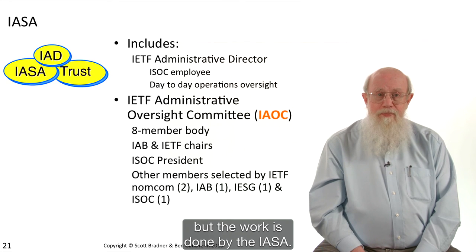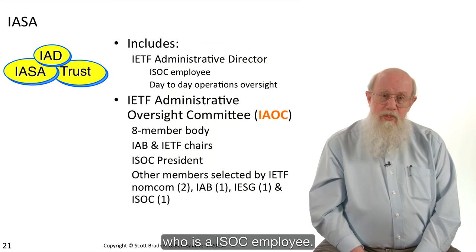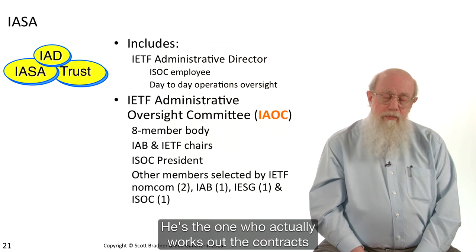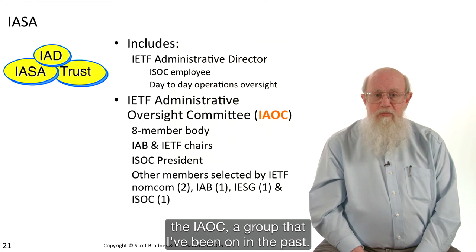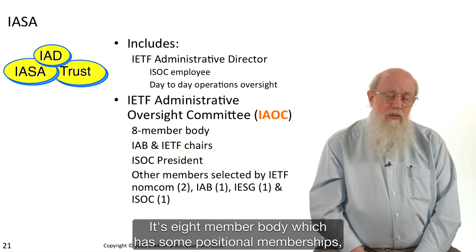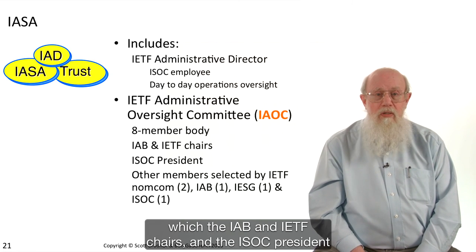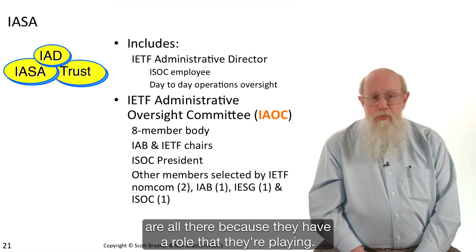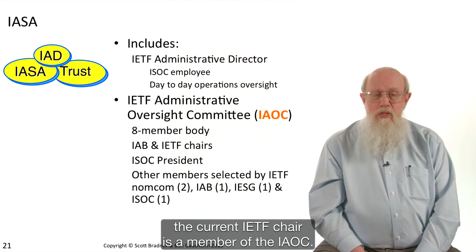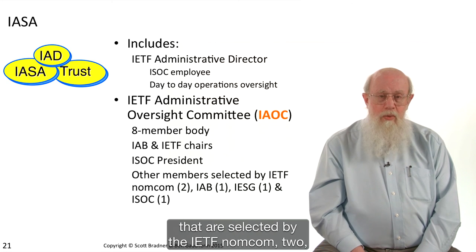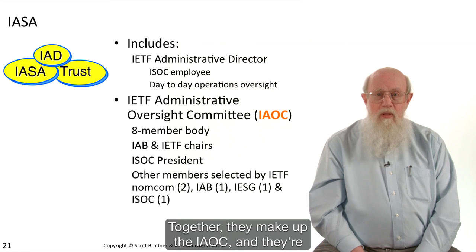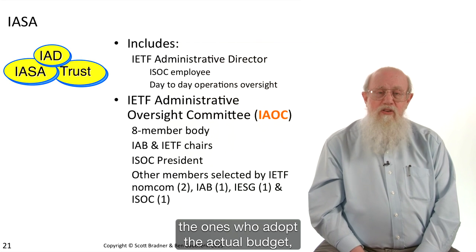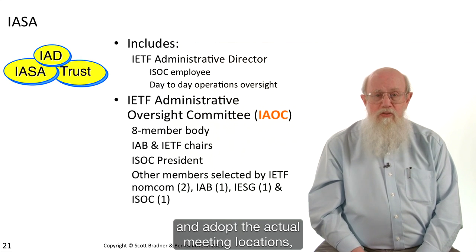The IASA includes the Administrative Director, who is an ISOC employee working out the contracts. There's an Administrative Oversight Committee, the IAOC, an eight-member body with some positional memberships — the IAB and IETF chairs and the ISOC president are members by virtue of their roles. In addition, some members are selected by the IETF NomCom (two), the IAB (one), the IESG (one), and the Internet Society Board (one). Together they make up the IAOC, and they're the ones who adopt the actual budget and meeting locations.